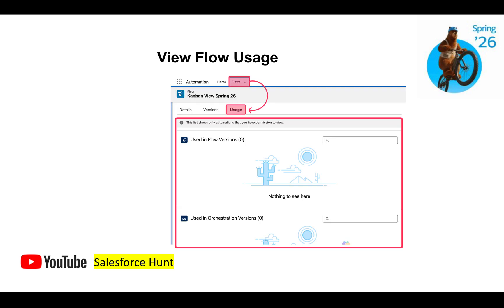The next feature is View Flow Uses. If you have automation apps and want to check where a flow is being used, go to the Automation app, click on Flows, and you'll see three tabs: Details, Version, and Uses. Under the Uses tab you can track each place the flow is used, including version information and illustrations — all in a single tab.